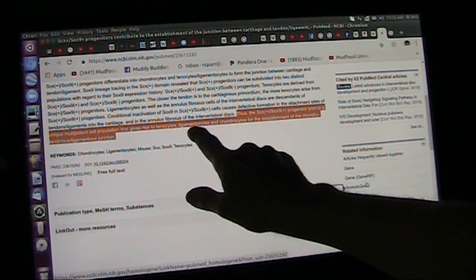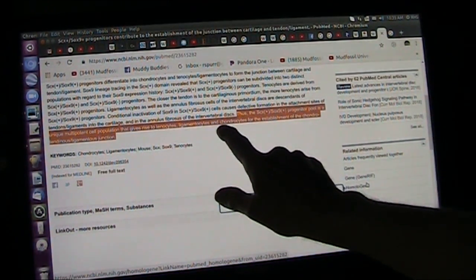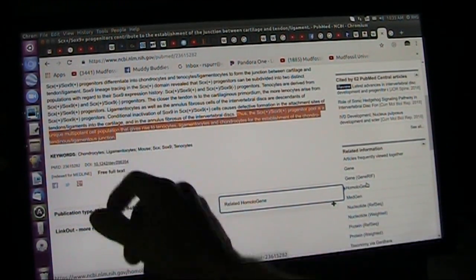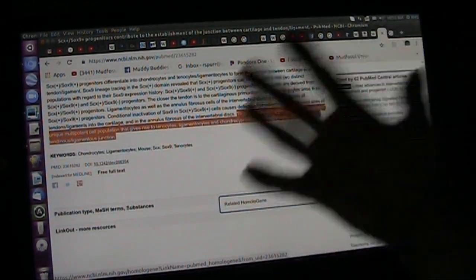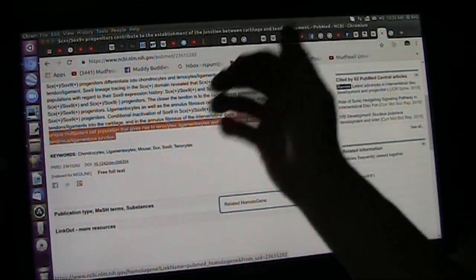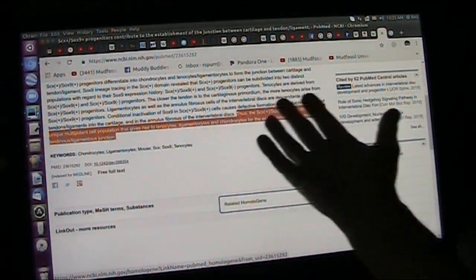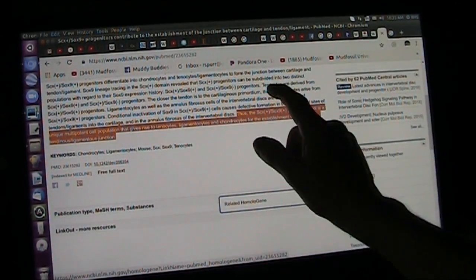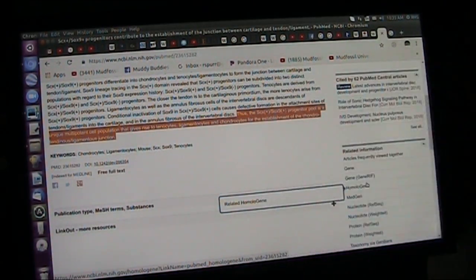Multipotent cell population gives rise to tenocytes, ligamentocytes, and chondrocytes for the establishment of the chondrotenuous ligamentaceous junction. Now, that is how you can move all your thingy. Everything moves back and forth with a ligament, a tendon, and these emplacements. So, knowing that they don't understand them, and these are the things that make your body work, let's try to understand them.